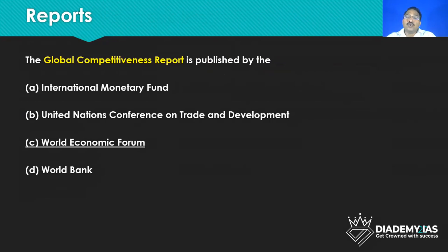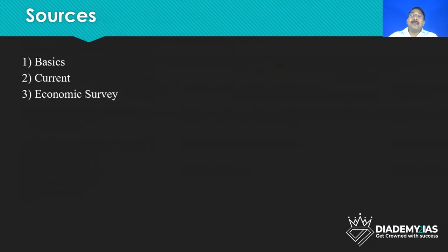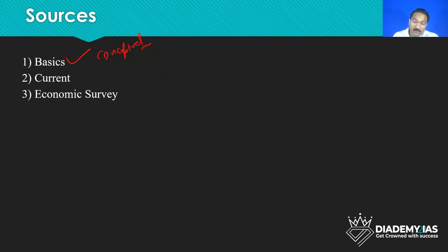Another type is report-based questions — they ask who is publishing this report. For that it is a factual question and we can remember these things. So primarily, what are the sources of questions? Either very basic but very conceptual questions solved through conceptual understanding, or current affairs questions — for example, if MSP is in news, they will ask about MSP directly or indirectly. Or economic survey — two to three questions come from it.